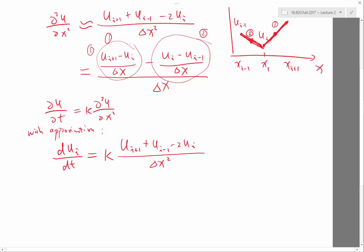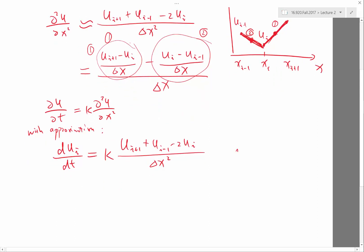So that is for all i goes from 1, 2, 3, all the way to N-1. How many equations do we get? How many ODEs do we get? We get N-1 ODEs.